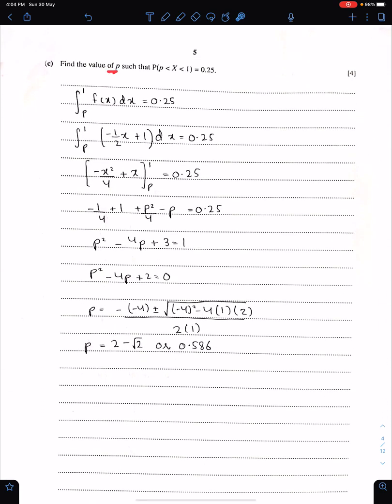Part C: Find the value of P such that probability X lies between P and 1 is 0.25. This is so simple. This is the lower limit, whereas this is the upper limit. F of X DX is equal to 0.25. By solving this equation, we can easily get the value of P. We just need to substitute F of X here. Then we need to integrate this function carefully. And then we need to solve this equation with the help of quadratic formula. The value of P is either 2 minus root 2 or 0.586.